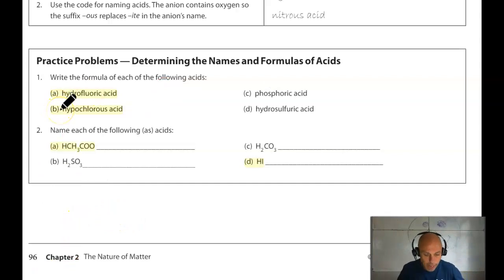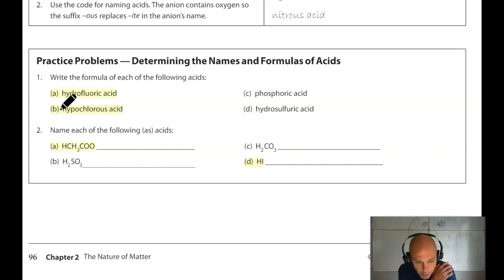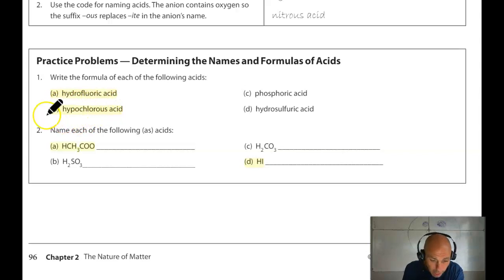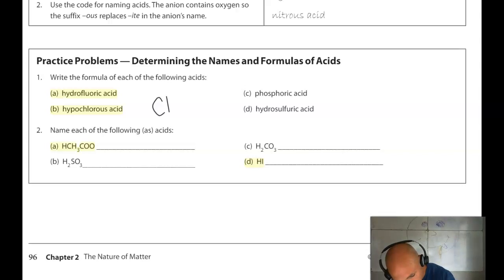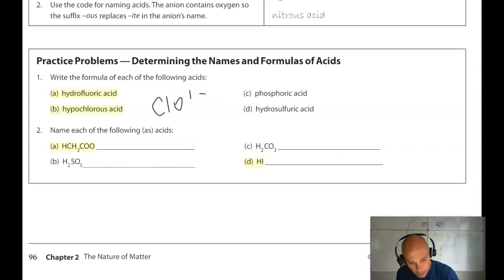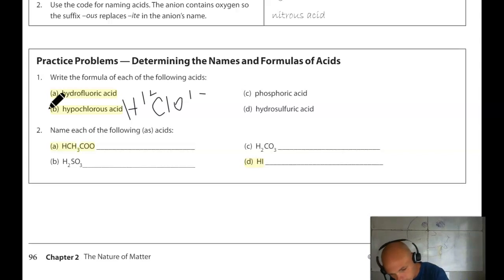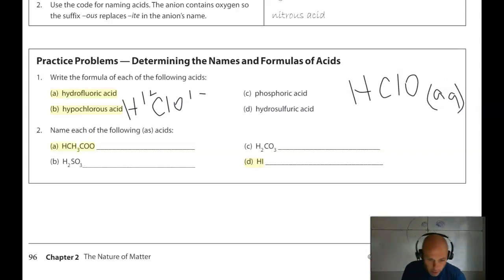For practice 1B: hypochlorous acid. It doesn't start with 'hydro' and it ends in '-ous', so I use 'dynamite is dangerous.' The root of the word is 'hypochlor', which means the anion is hypochlorite. Hypochlorite is ClO−. All acids have H+ as the cation. Since it's 1+ and 1−, the formula is HClO(aq).